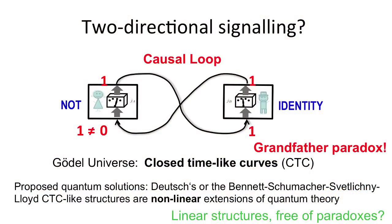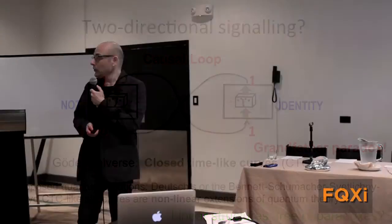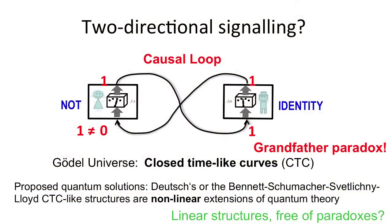Can we go beyond that? Can we have situations where we have two directional signaling? This is indeed true if you choose a solution of Einstein's equations in which you have closed time-like curves. Then you can have the output of Bob's laboratory input to Alice and the other way around in some kind of causal loop. But as we all know these causal loops are not without paradoxes. The easy way to see is imagine that Alice performs a NOT operation and Bob identity. So you start with zero as input to Alice's lab, turn it into one, go to Bob's lab, one enters and one exits, and of course one is not equal to zero, which is just another way to look at the grandfather paradox.